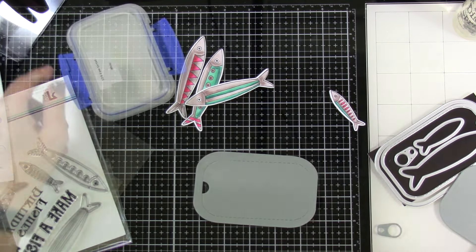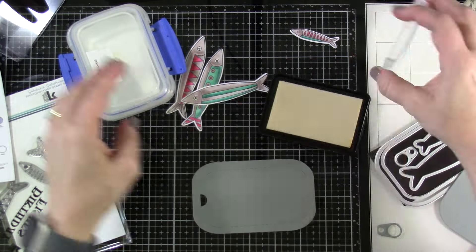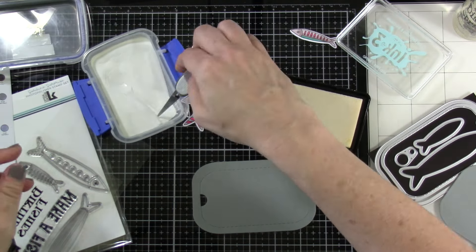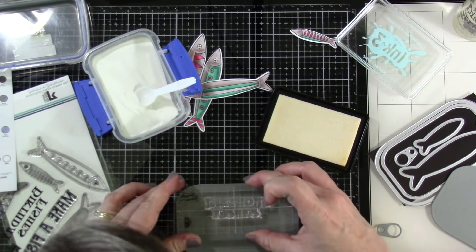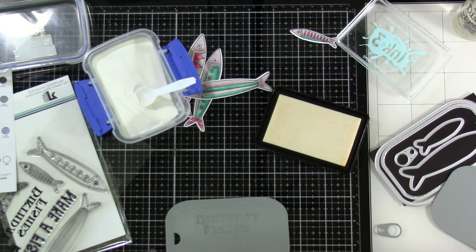I'm going to use my anti-static powder tool on that. We are going to stamp that out using some juicy embossing ink and then we'll cover that with some fine detail white embossing powder because I thought that would just be fun.